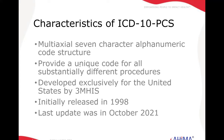ICD-10 PCS has a multi-axial, seven-character alphanumeric code structure. What this means is that there are different components of a hospital procedure — the approach, whether a device is used, what body system, what body part, and all these different things. The seven characters address all of these axes. It's multi-axial, and by doing this, it provides a unique code for all substantially different procedures.